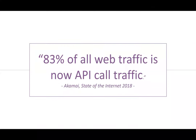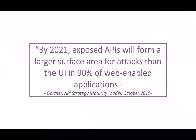So why API security? According to Akamai's State of the Internet report for last year, 82% of all web traffic is now not HTML but API traffic. The web as we know it today is primarily API-driven, and obviously this changes the threat model. Gartner released their API Strategy Maturity Model just last month, and they are saying that by 2021, for 90% of web-enabled applications, their APIs will be the larger attack surface than their user interface.